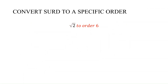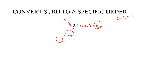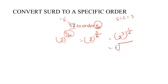The next topic is converting a surd to a specific order. We have the square root of 2 and need to convert it to order 6. Root 2 is 2 to the power 1 by 2. Check the denominator: 6 divided by 2 is 3. So we multiply both numerator and denominator of 1 by 2 by 3, giving 2 to the power 3 by 6, which equals 2 cubed whole to the power 1 by 6. This is the 6th root of 2 cubed, and 2 cubed is 8, so root 2 converted to order 6 is the 6th root of 8.